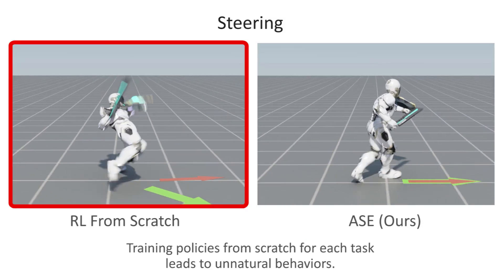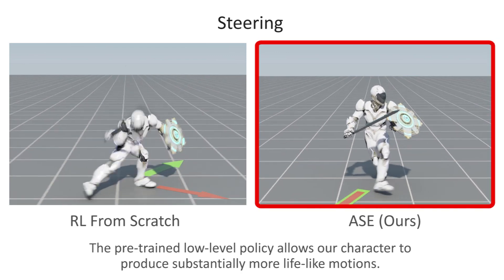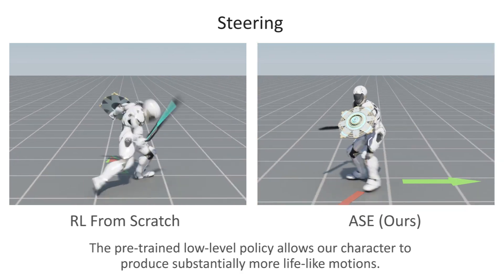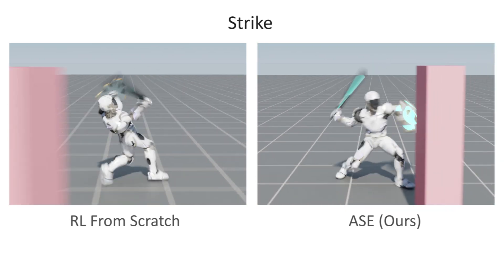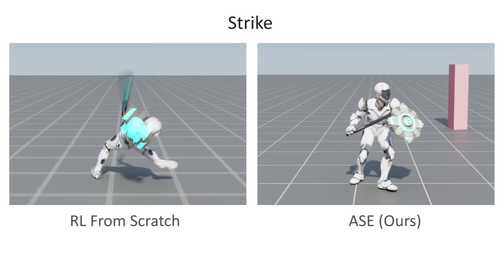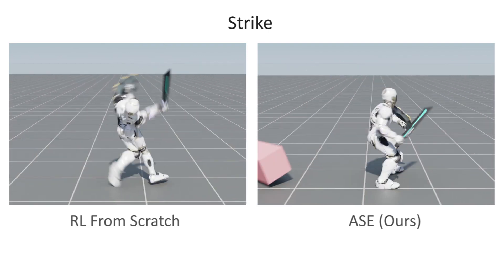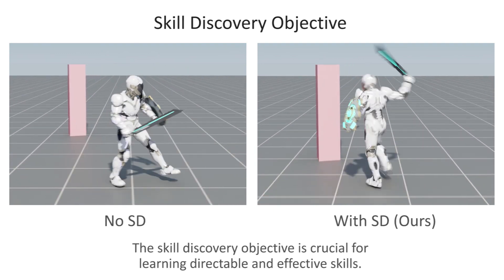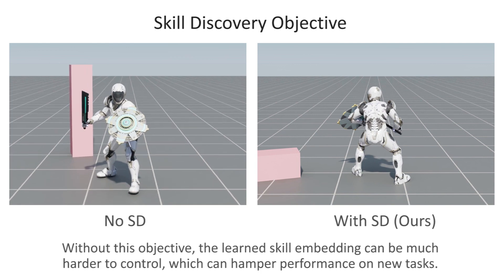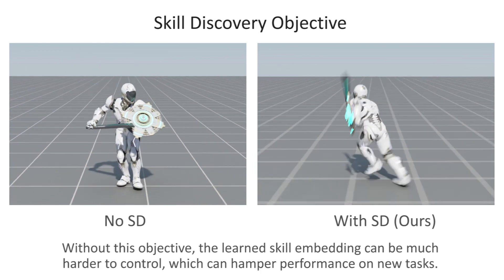Training policies from scratch for each task leads to unnatural behaviors. The pre-trained low-level policy allows our character to produce substantially more lifelike motions. The skill discovery objective is crucial for learning directable and effective skills. Without this objective, the learned skill embedding can be much harder to control, which can hamper performance on new tasks.